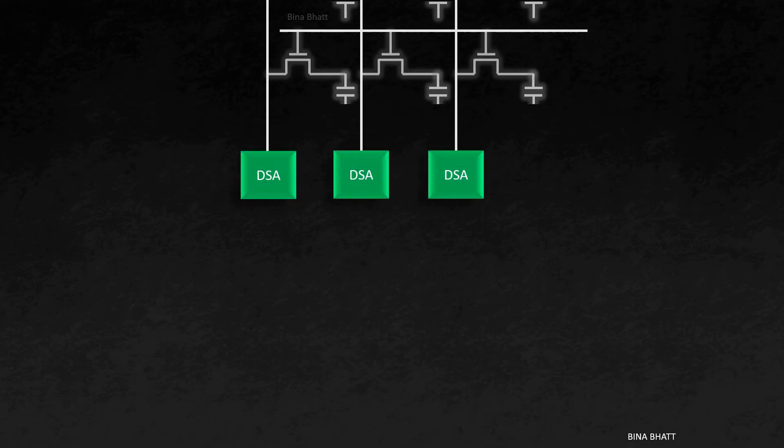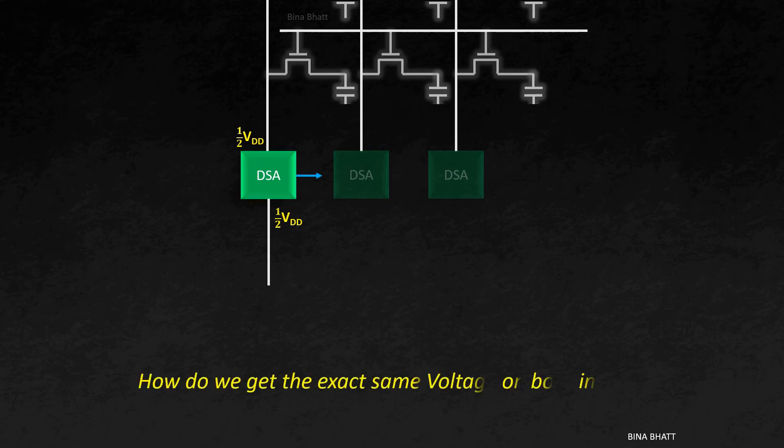Here you will find differential sense amplifier. It has two inputs. One is the reference voltage and the other is the bitline voltage. Reference voltage is provided by the bitline on the other side. Anyway, the key point is due to pre-charge, the voltage on both the inputs is VDD by 2. Now, even a slight fluctuation on either input results in a change in output.